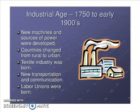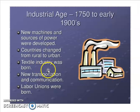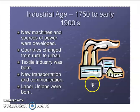The next age is called the industrial age. New machines and sources of power were developed, and machines were invented to make people's lives easier. Countries changed from rural to urban — from provinces and remote areas, cities began to be built. The textile industry was born, meaning factories for fabric were established. New transportation and communication systems were developed — trains, automobiles, and cars started to be used. At the same time, labor unions were born, meaning people started to work in factories and small companies.